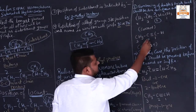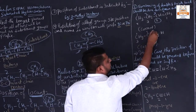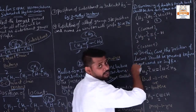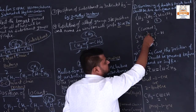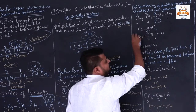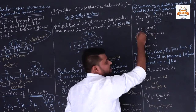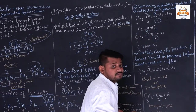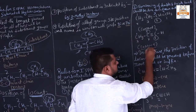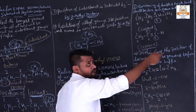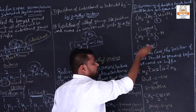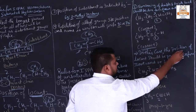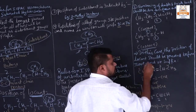Similarly for triple bonds: going left to right, the triple bond is after position 2. Going right to left, the triple bond is at position 1. So the correct numbering is right to left, giving position 1.